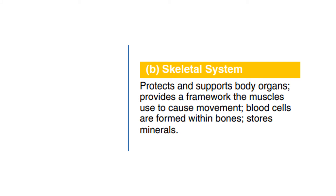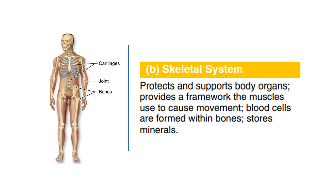Next is the skeletal system. It protects and supports body organs and consists of cartilage, joints, and bones. It provides a framework that skeletal muscles use to cause movement, and also has a protective function — for example, the skull encloses and protects the brain. Cavities of the skeleton are sites where blood cells are formed, and the hard substance of the bones acts as a storehouse of minerals.